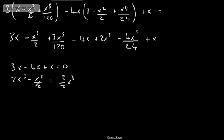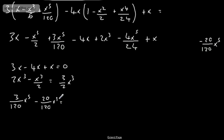We've got no terms in x to the 4th, so now terms in x to the 5th. We've got 3 over 120 x to the 5th. Now, if we convert this into 120ths, we need to multiply that by 5. So we'll have minus 20 over 120 x to the 5th. So if we put this in, we've got minus 20 over 120 x to the 5th, which will give us minus 17 over 120 x to the 5th.